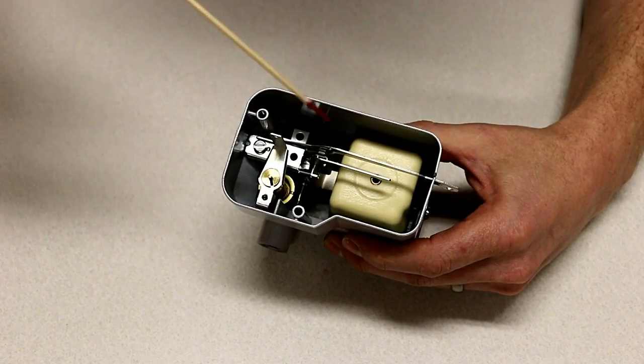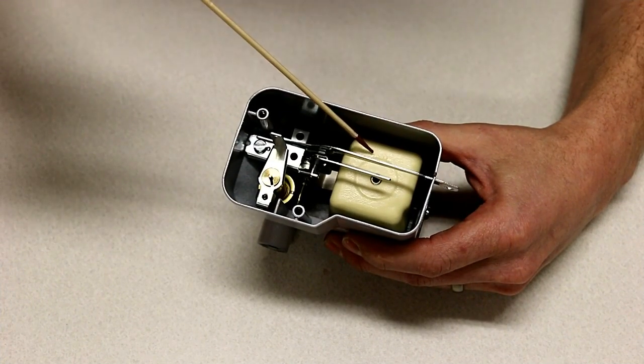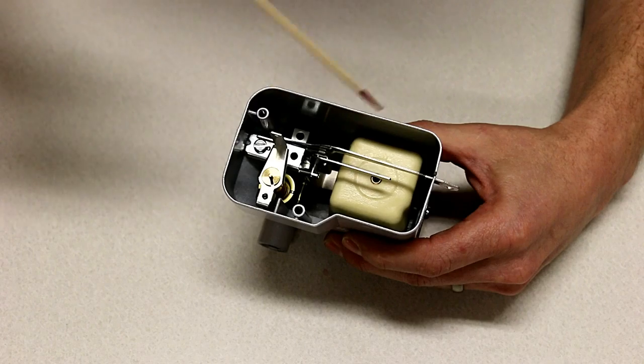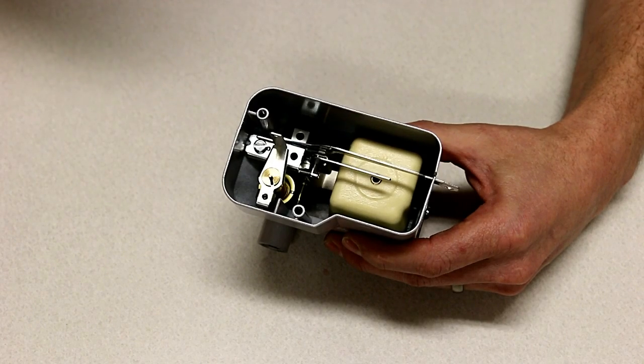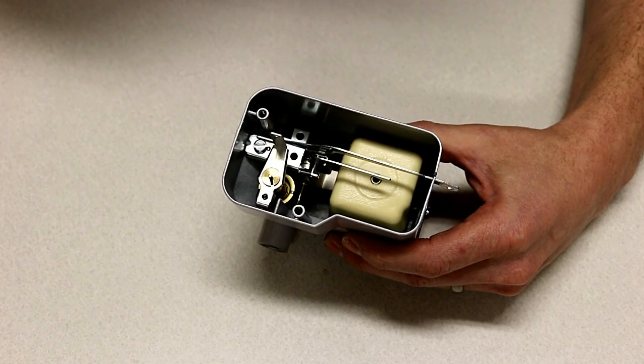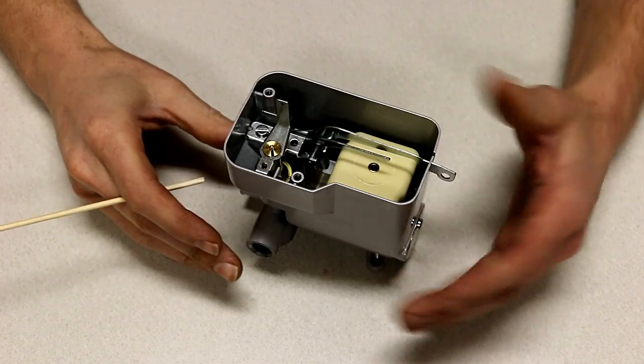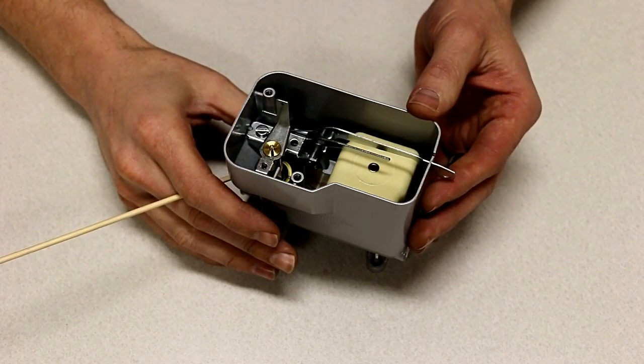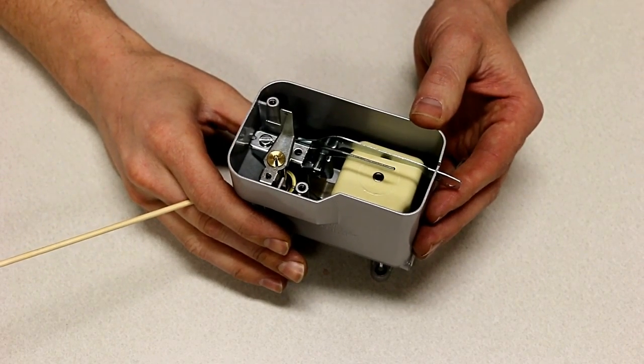The first thing you notice after removing the top cover is this float. The float assembly is responsible for one of the two main functions of this oil control. If I pick up this lever that we saw from the outside, you'll see the float fall into its active position.